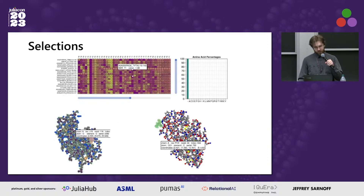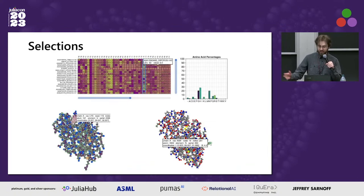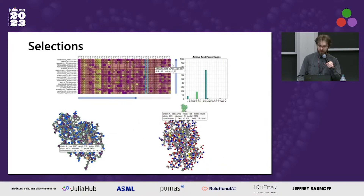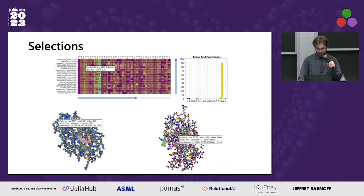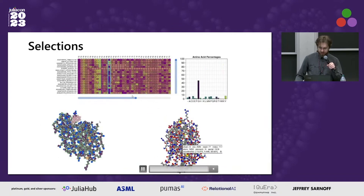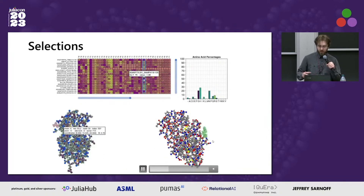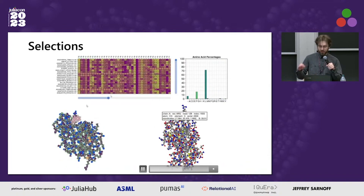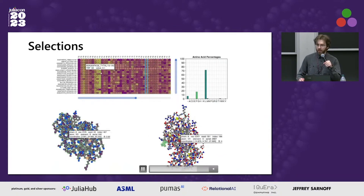One of the bigger recent developments is selections, which can be done using the mouse or by modifying the selected observable in the plot data. Selections can communicate with other plots, like the multiple sequence alignment. When you click on a structure, you select a residue. Soon there will be modifiers — hold control for multiple selections or alt to select particular atoms. There are also informative tooltips that can be easily disabled if they get in the way.